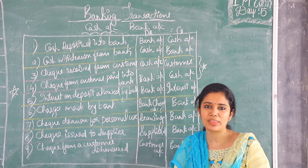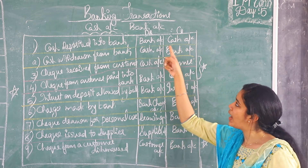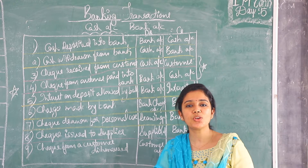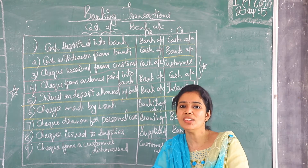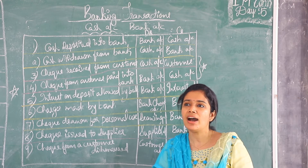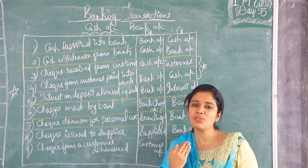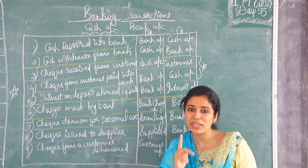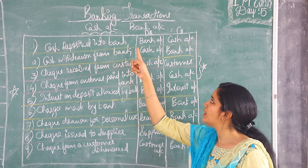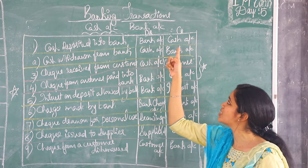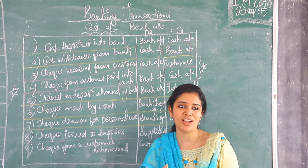When we deposit cash into the bank, the value of cash decreases, so it has to be credited. And bank account — cash comes into the bank, so bank account increases. The entry is: bank account debit to cash account.